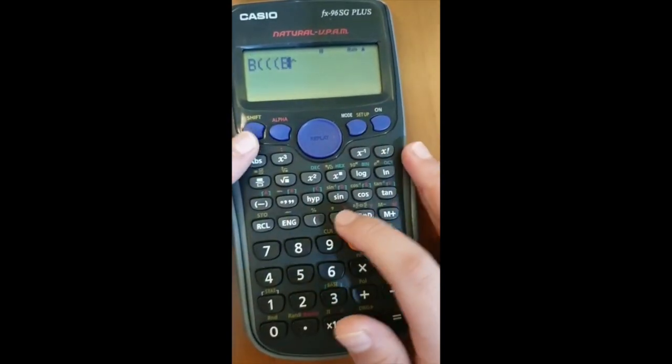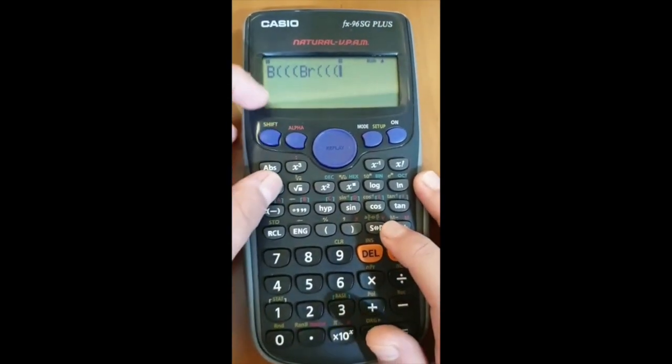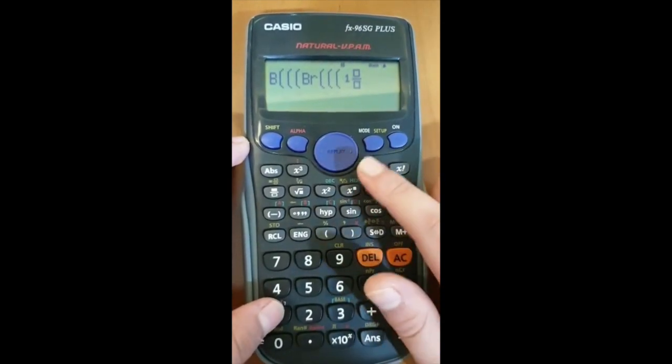Press another, and then go behind, three brackets again. Press fraction place, one, go up there, one.